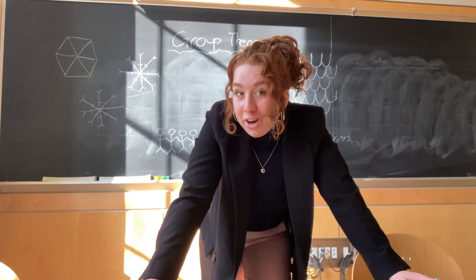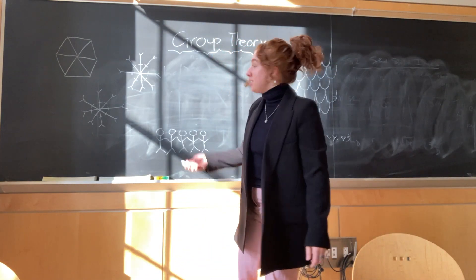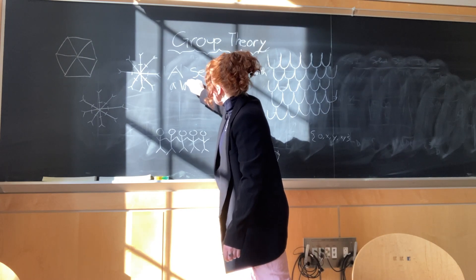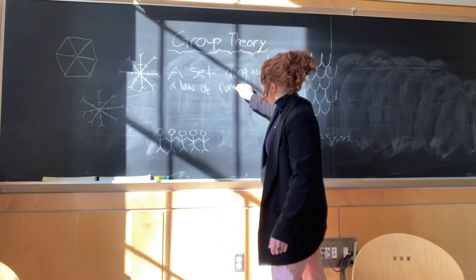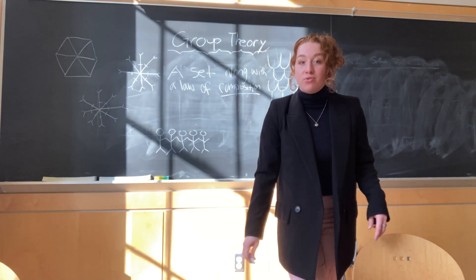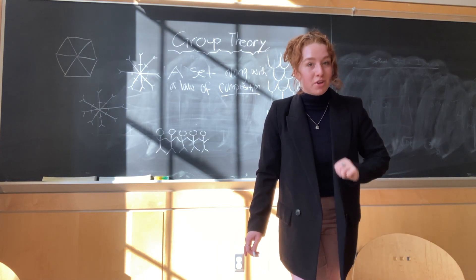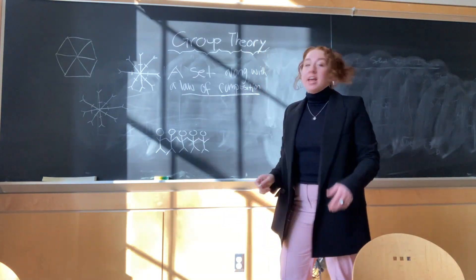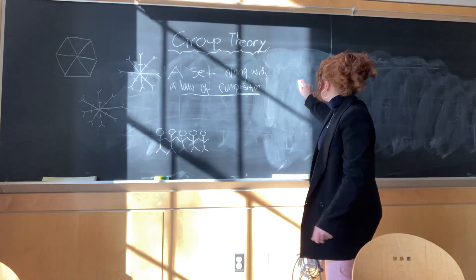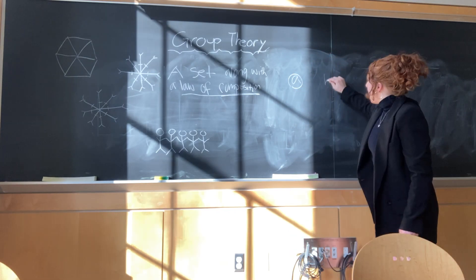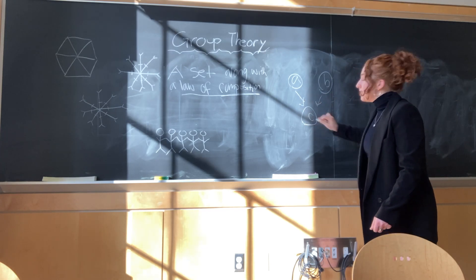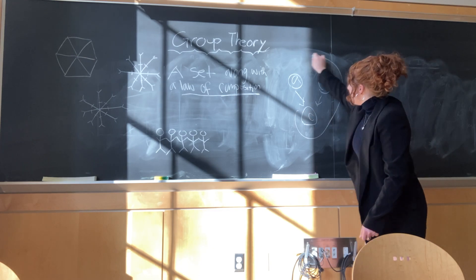So what is a group? And what's so theoretical about it? A mathematical group, by definition, is just a set along with a law of composition. And that set and law of composition must follow three essential rules of group theory. A law of composition is simply a rule that says if you have two elements in a group — element A and element B — you have to combine them to create a third element C, which is also in the group.